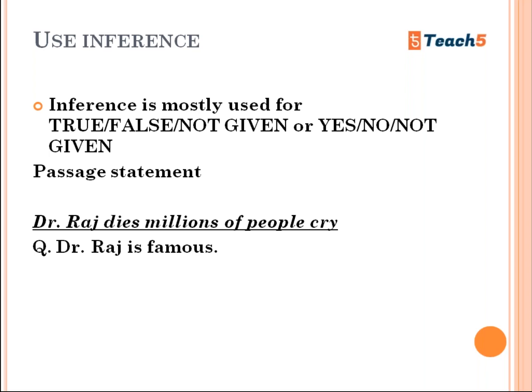The question is: 'Dr. Raj is famous.' Students may think that 'famous' is not in the sentence, so they put it as Not Given or False. But this statement is true by inference, because the conclusion is: millions of people are crying, so Dr. Raj must be a famous person — that is why millions of people are crying and know him.